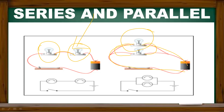The electric current — how do we have a variation between current and potential? In a series connection, the current is the same and the potential difference is different. In a parallel combination, the potential difference is equal across each component, while the current is different. So the series and parallel combination is fundamental.